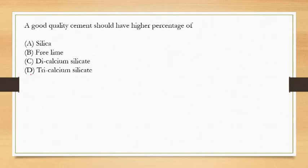Next question: a good quality cement should have higher percentage of? If silica is used in higher percentage, it is difficult for cement to fuse and form clinkers. If free lime is used in higher content, it causes unsoundness. Tricalcium silicate is found in maximum percentage in good quality cement. So the answer is option D, tricalcium silicate.